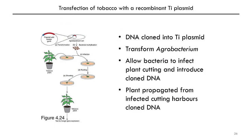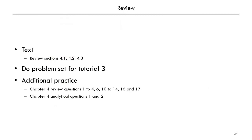So that's it for chapter 4. We opened this chapter on molecular cloning with an analogy to plant cloning, and we're closing the chapter on a similar note — cloning recombinant DNA to ultimately clone transgenic plants. You will find additional reading in sections 4.1 to 4.3 in the text, and you will find exercises in the tutorial problem set and textbook questions.